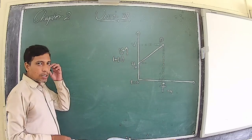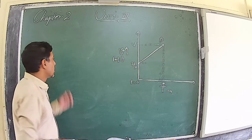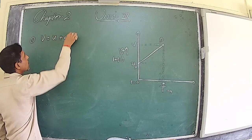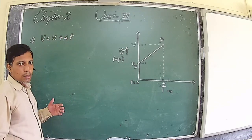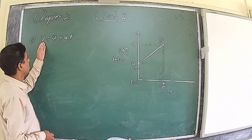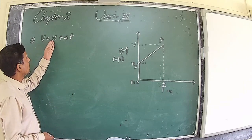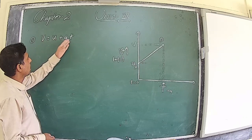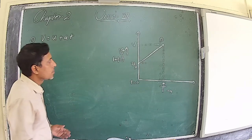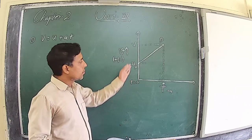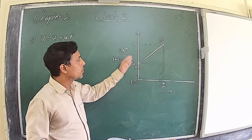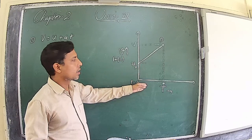If we have to derive the first equation of motion, that is v = u + at, the first equation relates final velocity v with u, a, and t. We know that to calculate acceleration from a v-t graph, we need to find out the slope. So we need to find out the slope of the graph.